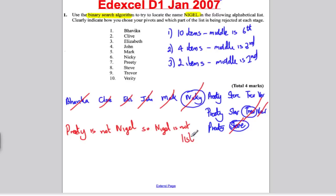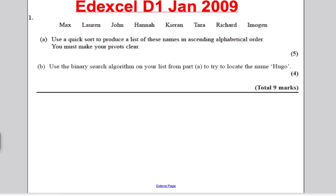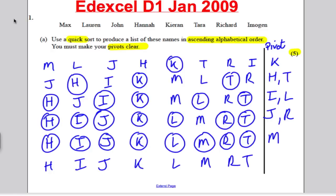Let's have a go at the next question. Here's the next question, Edexcel D1 January 2009, involves doing a quick sort first and the binary after. Pause the video, work through the solutions, and in ten seconds I'll go through the answer.